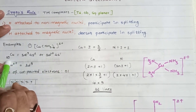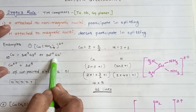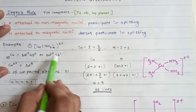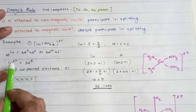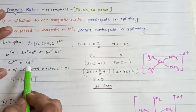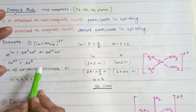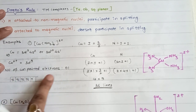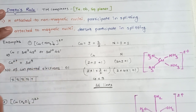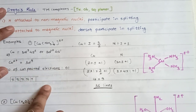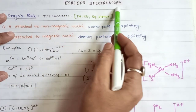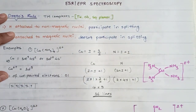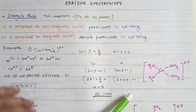Now let's see copper - atomic number 29. For Cu²⁺, we remove 2 electrons, giving the configuration 3d⁹. After filling all electrons in the d orbital, we get only 1 unpaired electron. Therefore this system is EPR active, because EPR spectroscopy requires unpaired electrons.